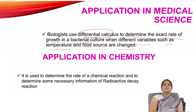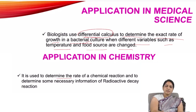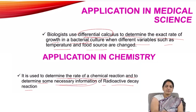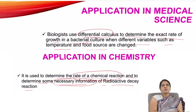In chemistry, vector calculus is used to determine the rate of chemical reactions and to determine necessary information about radioactive decay reactions. In these two ways, calculus can be applied in the field of chemistry.